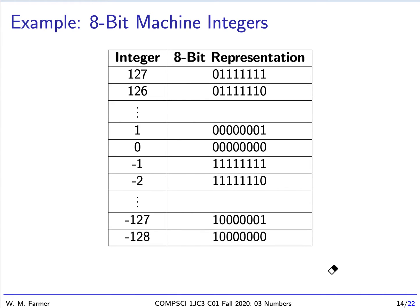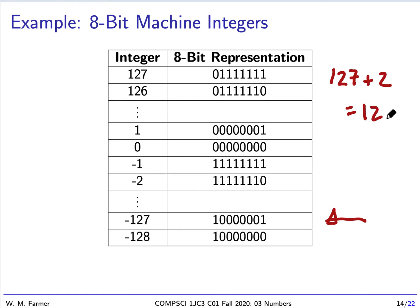So if we want arithmetic that behaves normally, consider 127 plus 2. In normal addition that would be 129, but we can't represent 129 — it's not in our range. Because we're doing modular arithmetic, 127 plus 2 actually gives us minus 127. That's not the correct mathematical answer, but it's what modular arithmetic produces.